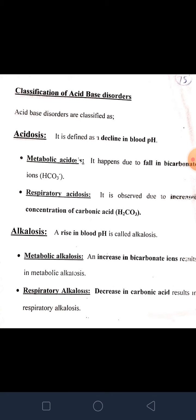The first disorder due to acid-base pH variation is acidosis. Acidosis is defined as the decrease in blood pH when the acidic load is high in the body. The normal pH value is 7.35 to 7.45. If pH is less than 7.35, it is considered acidosis. Acidosis is subclassified into two types: metabolic acidosis and respiratory acidosis.